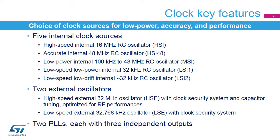STM32WB microcontrollers embed two oscillators for use with an external crystal or resonator: a high-speed external 32 MHz oscillator, or HSE, with a clock security system; and a low-speed external 32.768 kHz oscillator, or LSE, also with a clock security system. STM32WB microcontrollers also embed two phase-locked loops, each with three independent outputs for clocking the CPUs and different peripherals at different frequencies.